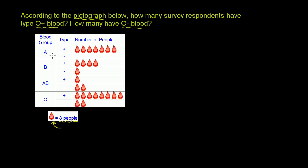So for example, if you say how many people have A positive, it would be one, two, three, four, five, six, seven blood drops. But each of those blood drops represent eight people. So it would be 56 people have type A positive.